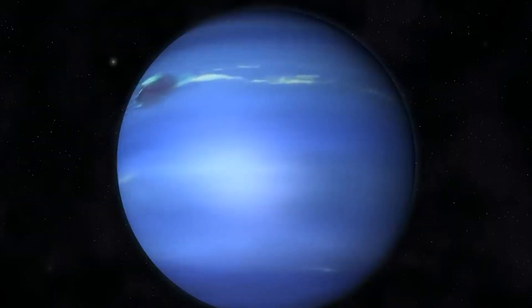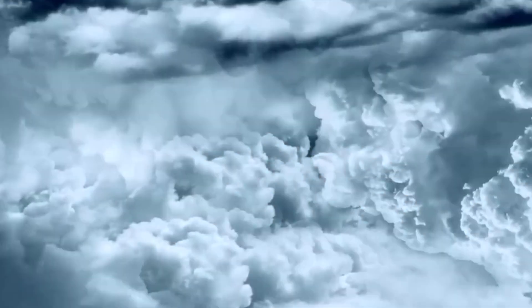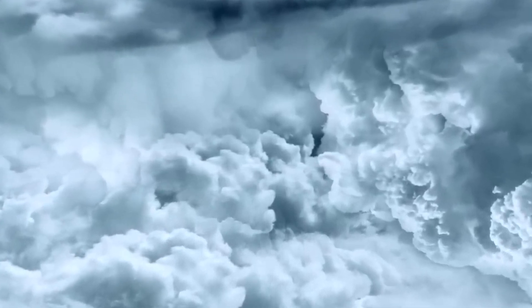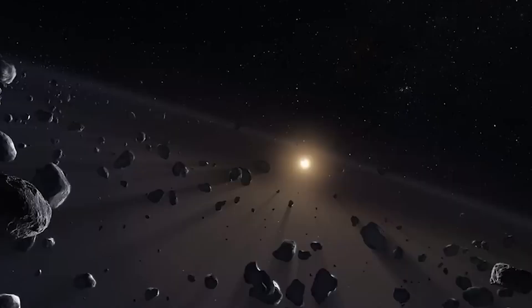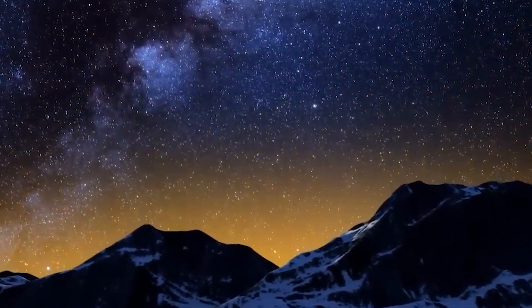Neptune is home to some of the wildest and most intense storms in our solar system. The winds on this distant planet are incredibly fast, reaching speeds of up to 12,200 miles per hour. This makes Neptune's winds the strongest recorded anywhere in the solar system, far surpassing those of any other planet.